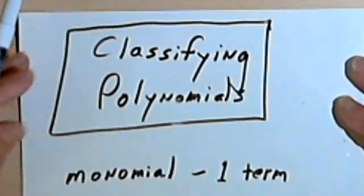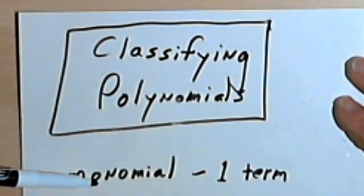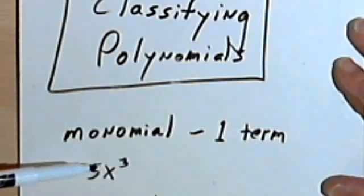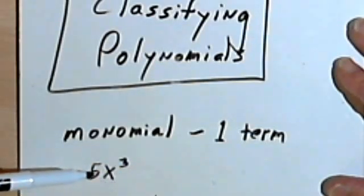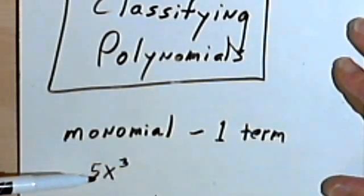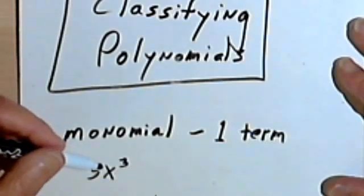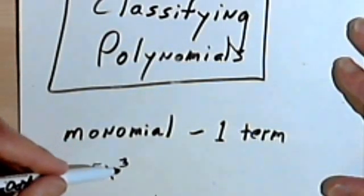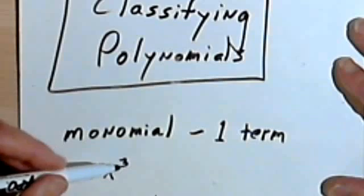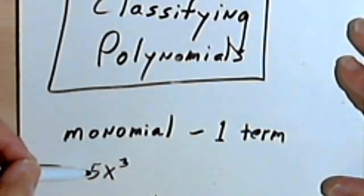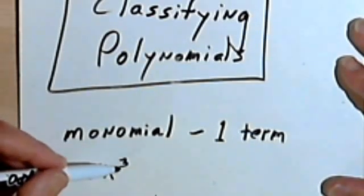So if all you have is one term, then you've got a monomial. So 5x to the third is a polynomial, because it's made up of one or more monomials. Since it's made up specifically of just one, it's a monomial, and its degree is the exponent. So this is a third-degree monomial, because the exponent is 3.